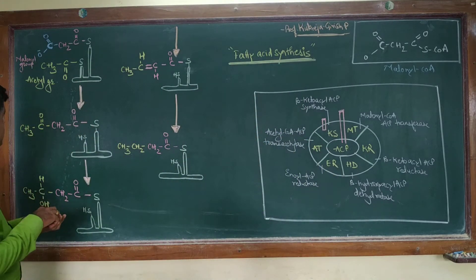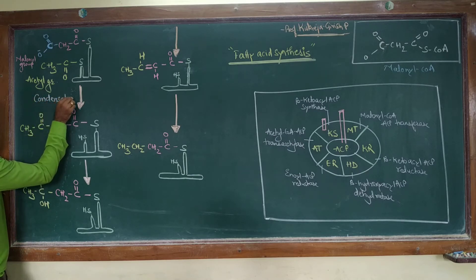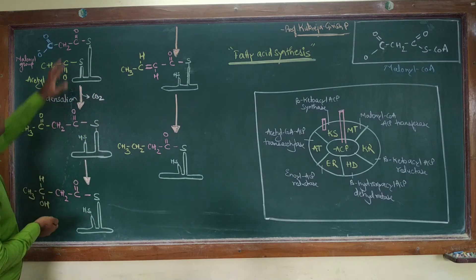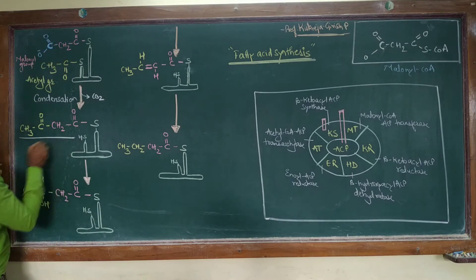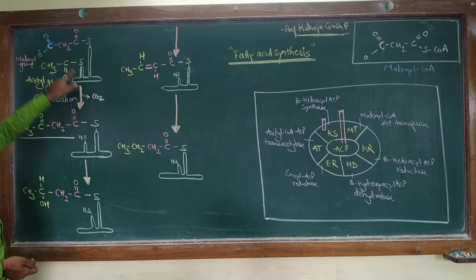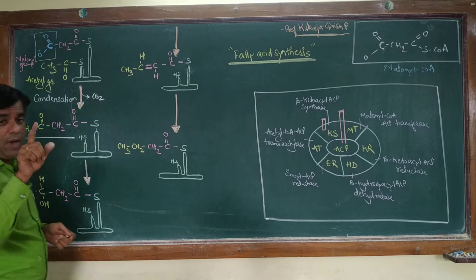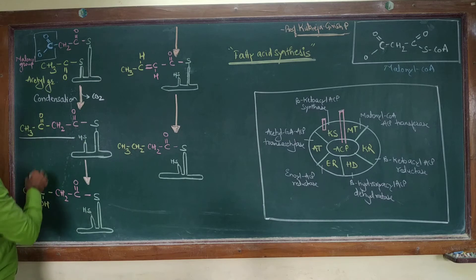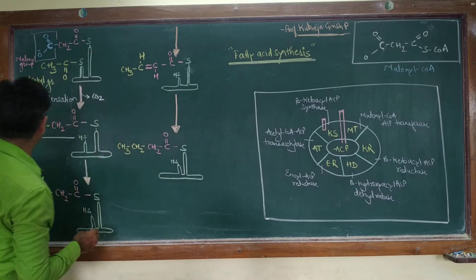The first step is condensation. During condensation, the activated acetyl-CoA group and malonyl-CoA group condense together. This condensation occurs with the concomitant removal of carbon dioxide — the extra CO2 that was added during the formation of malonyl-CoA from acetyl-CoA is removed, and you have formation of the condensed product.